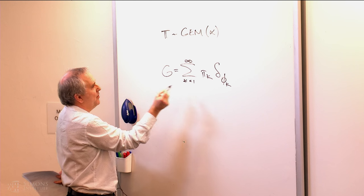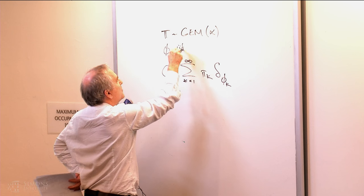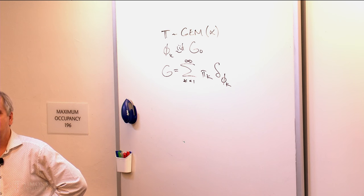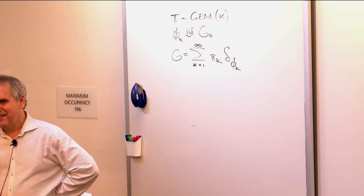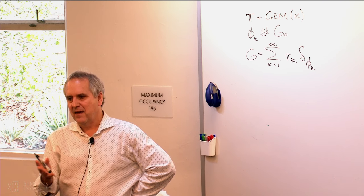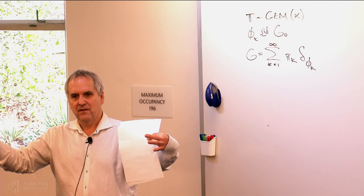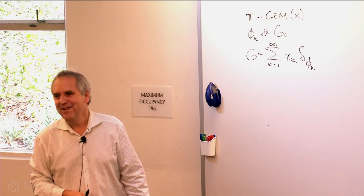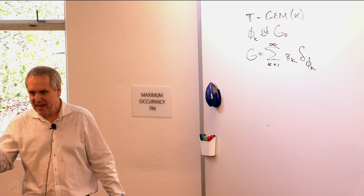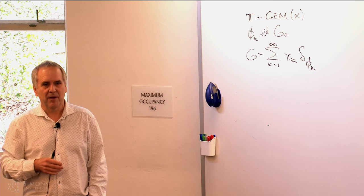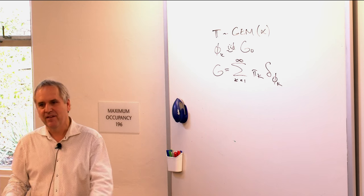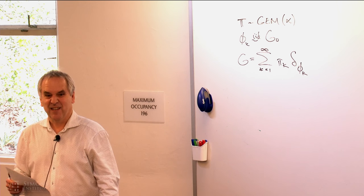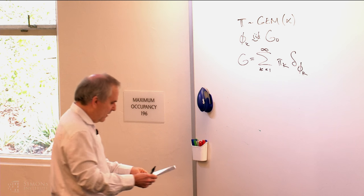The phi_k atom locations are drawn IID from some underlying base distribution, call it G₀. For Tamara, that was a Gaussian with its own hyperparameters. The GEM is basically like a Dirichlet distribution, but the right way to think about it is as beta stick-breaking with beta(1, alpha). Interestingly, if you take a Brownian motion and look at the times between maximal excursions, those times are GEM — it's a very deep mathematical theory.